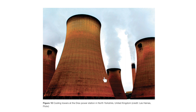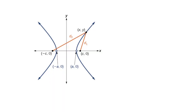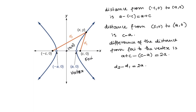This cooling tower is shaped like a hyperbola. This is a hyperbola centered at the origin (0, 0), and these two are the foci. Let x, y be a point on the hyperbola, and d1 and d2 are the distances from that point to each focus. (a, 0) and (-a, 0) are the vertices of the hyperbola. If that point x, y is at (a, 0), since (a, 0) is also a point on the hyperbola, the distance from one focus to that vertex is a minus negative c, which is a plus c.